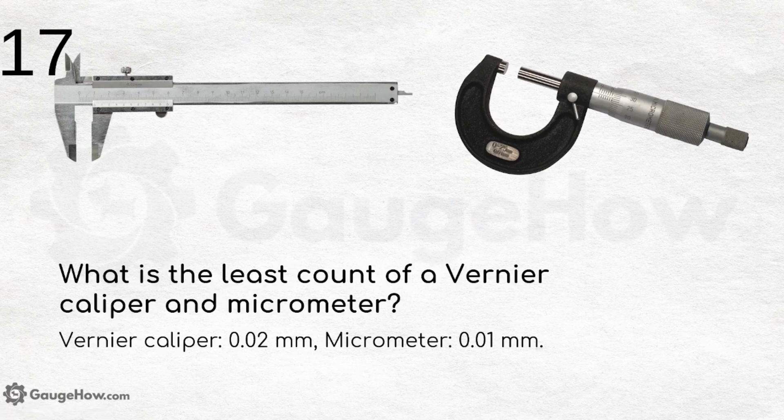What is the least count of a vernier caliper and a micrometer? The least count of a vernier caliper is 0.02 mm, while that of a micrometer is 0.01 mm. Many people confuse or interchange these values. There are now digital vernier calipers and micrometers as well, but it is important to remember these least counts.